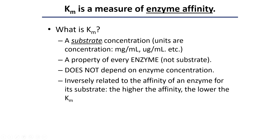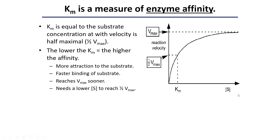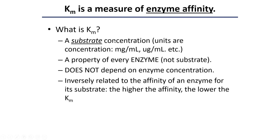What is Km? Km is a substrate concentration — it comes from the x-axis, which is substrate concentration. So Km is the substrate concentration at which half of the enzymes in your solution are occupied with substrate. The units for Km are concentration. Km is a constant — it's a property of every enzyme and does not depend on enzyme concentration. Even if we reduced the amount of enzyme in solution, that's not going to change the Km or the affinity of that enzyme for binding a substrate. Km is also inversely related to the affinity of an enzyme for its substrate: if the enzyme is really good at binding substrate, the Km will be low — you don't need a lot of substrate around to encourage binding. If the enzyme has a low affinity, the Km will be higher — you need more substrate to encourage the enzyme to hold on to it.